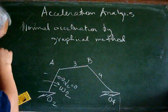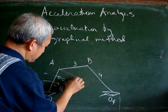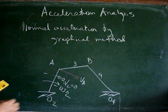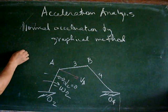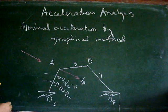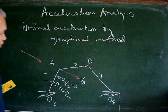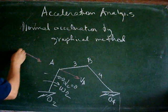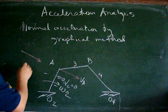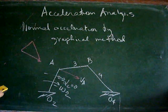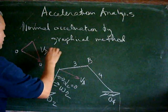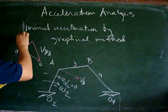We can have the velocity vector of A and perform velocity analysis by the relative velocity method. We transfer that vector, and we know that the velocity of B will have to be along its direction, while the relative velocity of B with respect to A will have to be perpendicular to link AB. From point O, this is the velocity of B with respect to A, the velocity of A, and the velocity of B.